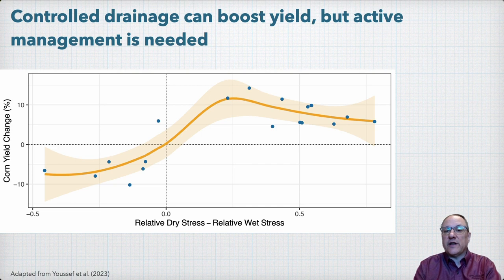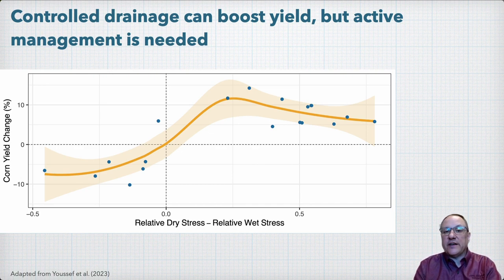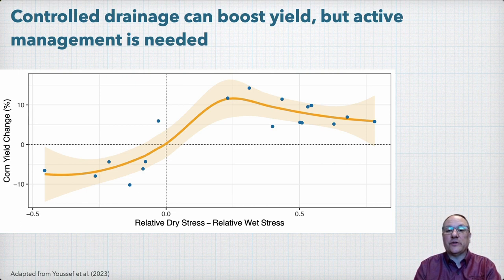It should be noted that these were research sites where control structure settings were generally managed based on calendar dates instead of being actively managed based on water table or soil moisture conditions. More active management to provide additional drainage when needed during wetter periods or after large rain events could and should help limit or eliminate some of these yield losses. The results do show that active management is required both to maximize the yield benefits and also minimize any yield losses.